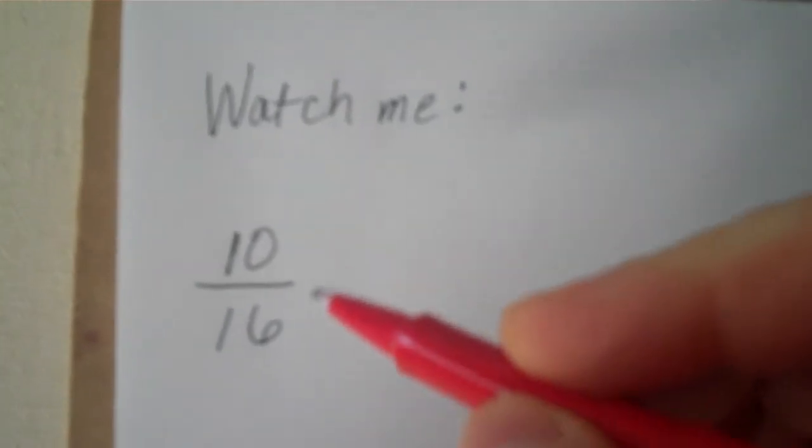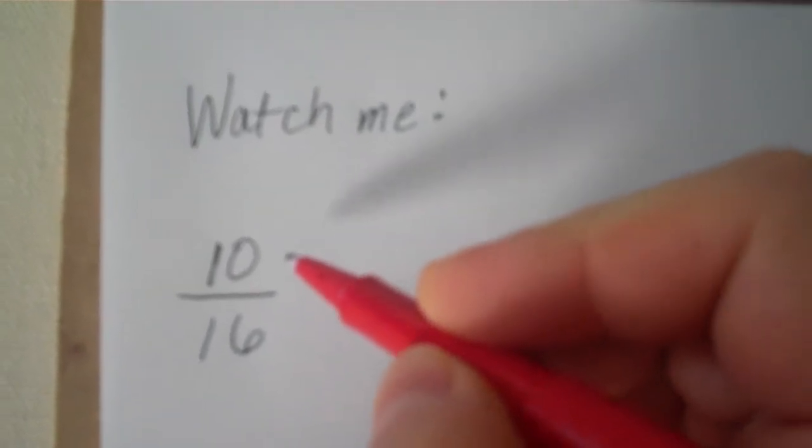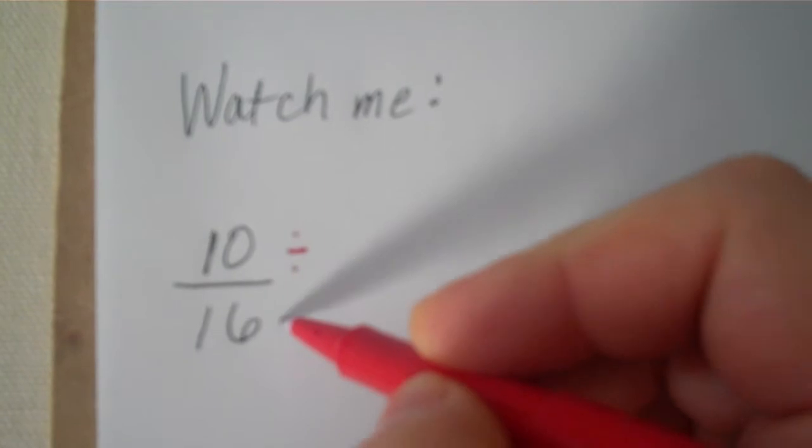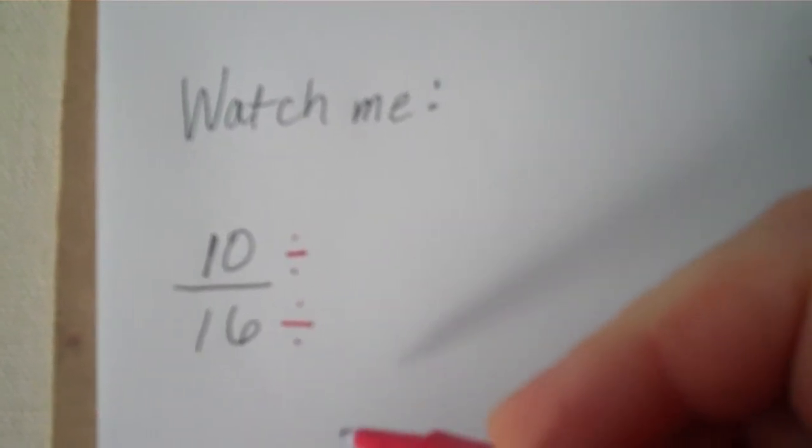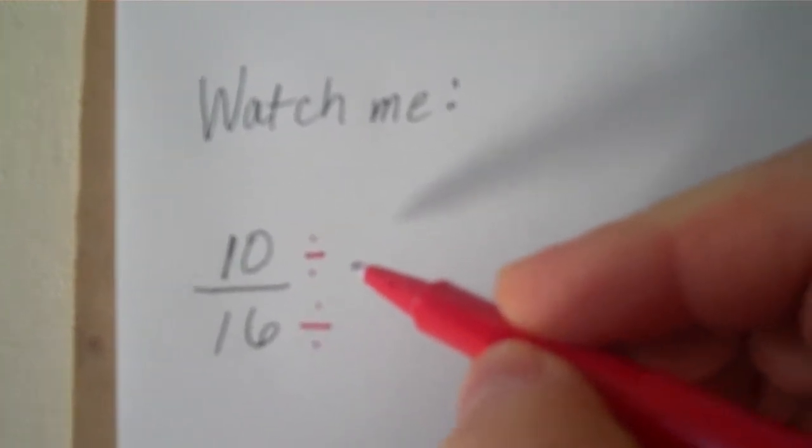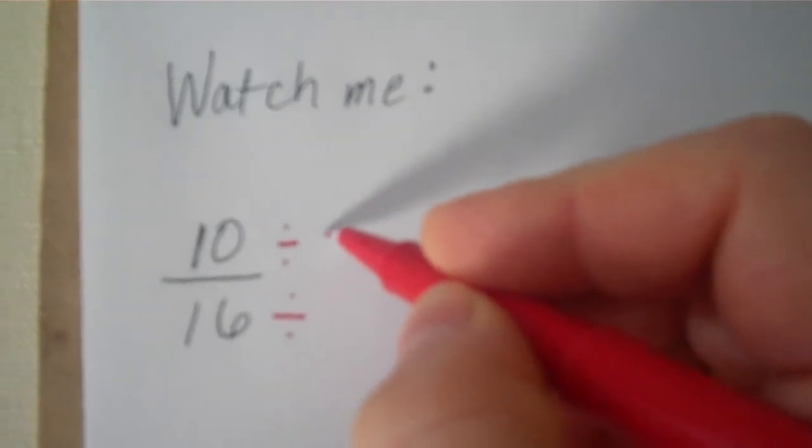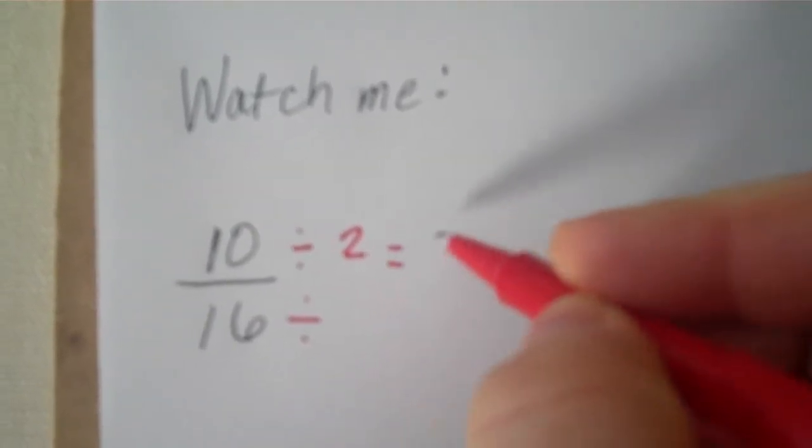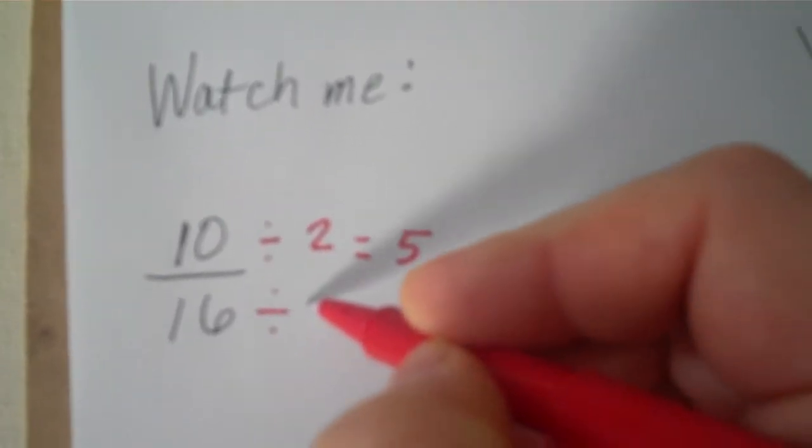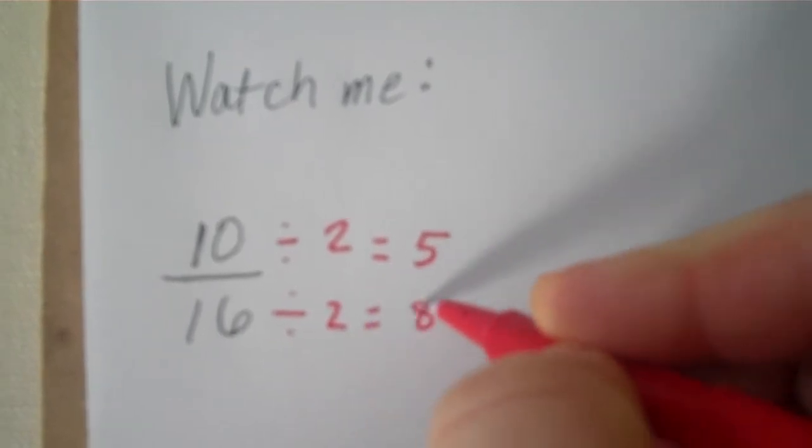Watch me. 10 sixteenths. I need to think of a number that I can divide 10 by that I could also divide 16 by. I know that number is 2. I don't even have to list. 10 divided by 2 is 5, and 16 divided by 2 is 8.